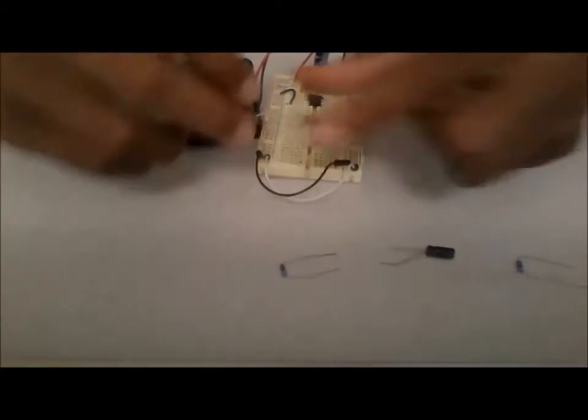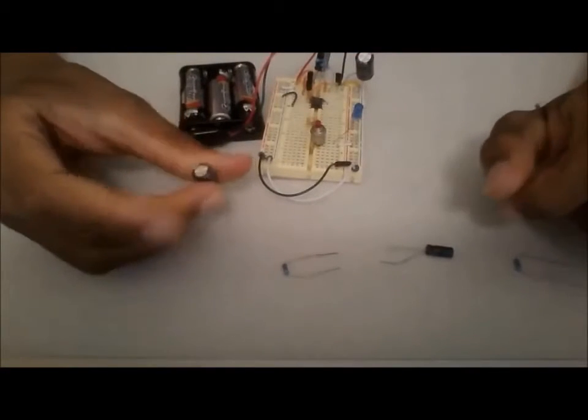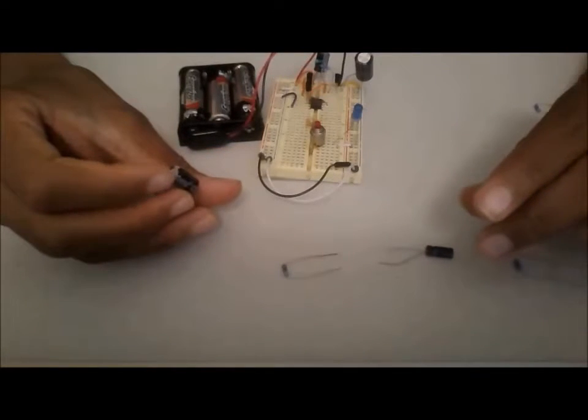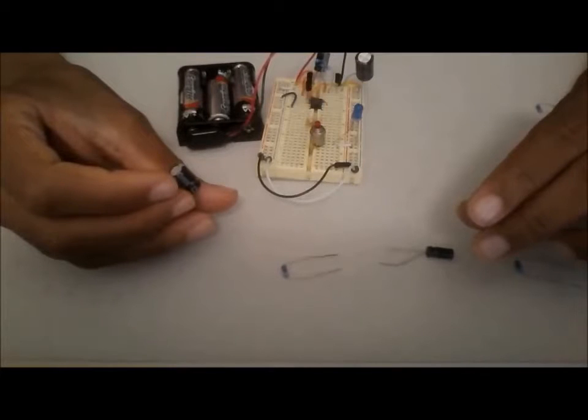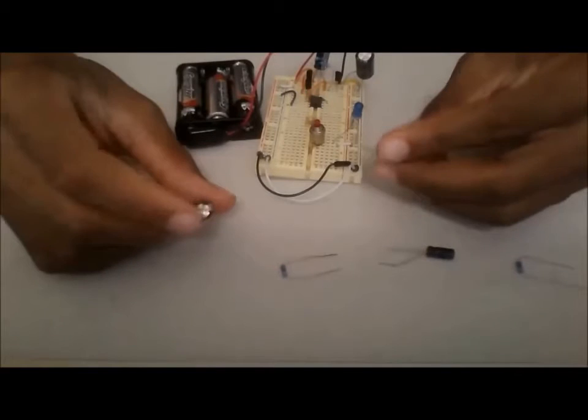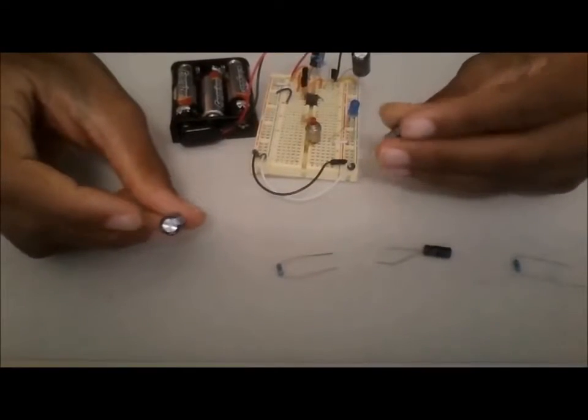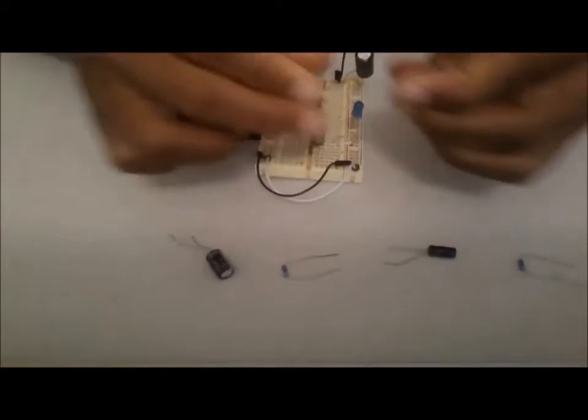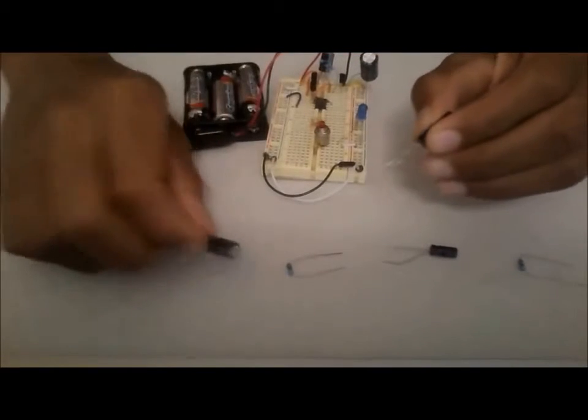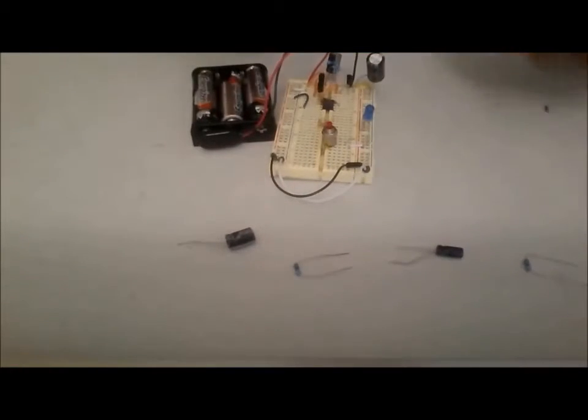This one I was using previously has 100 microfarads. Micro - I do believe a micro is, I think it's a thousandth. Pretty sure it's a thousandth of the base number, which is just a farad. So 100,000... nah, it's not a thousand, it's way more than that. But you can put that in the comments if you want.